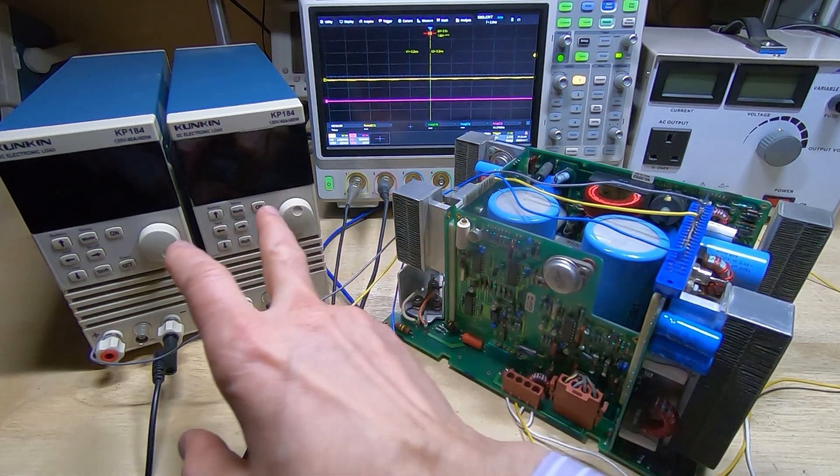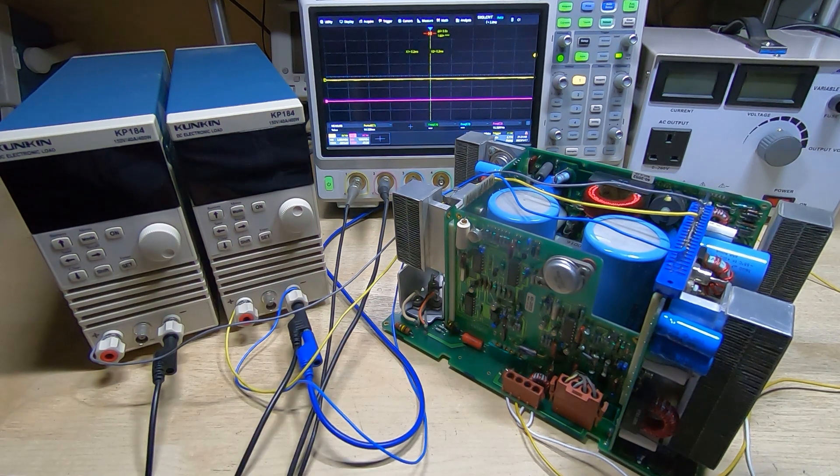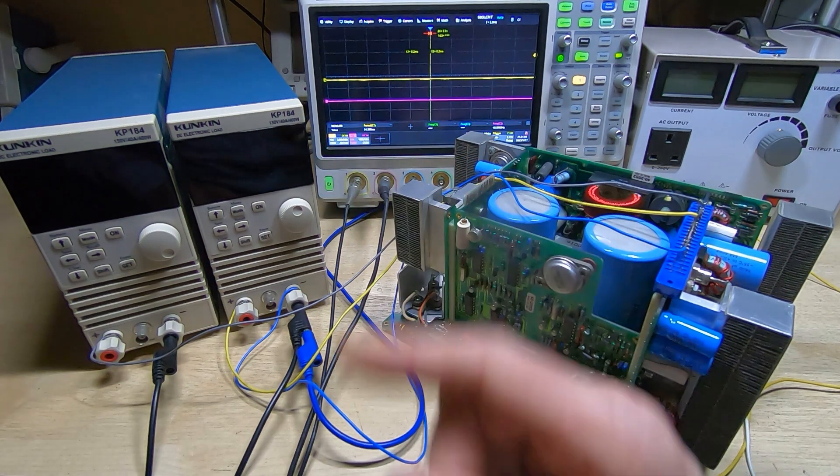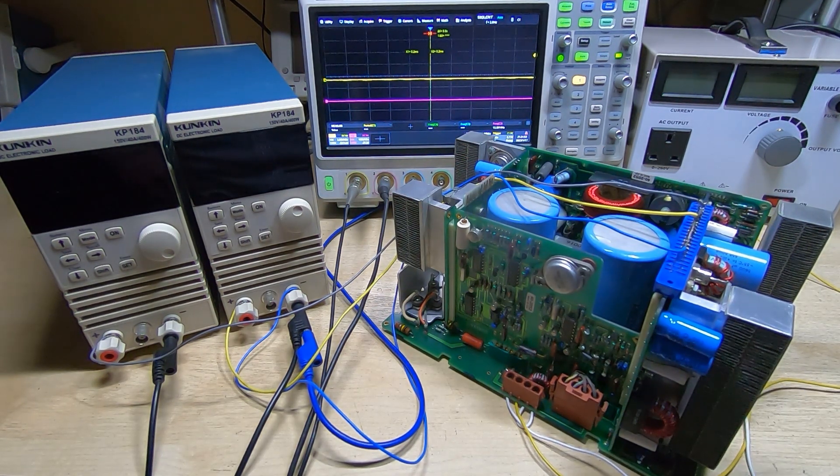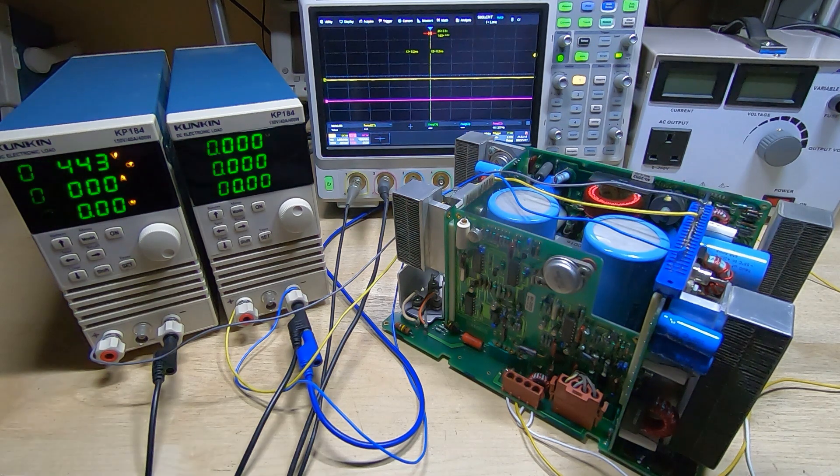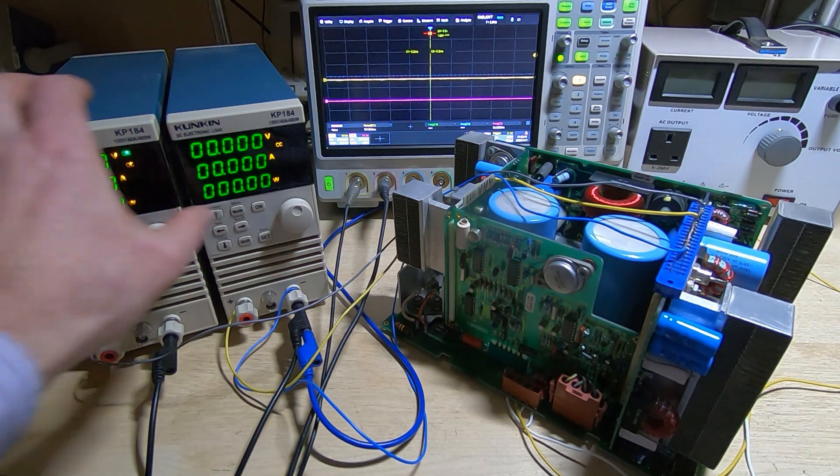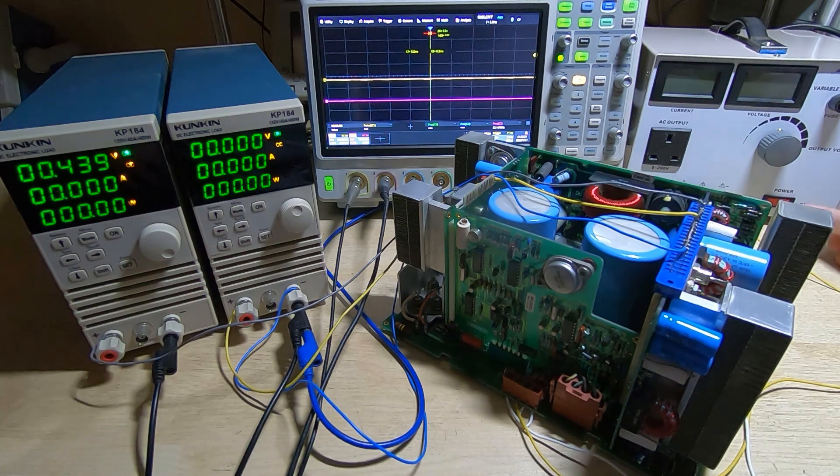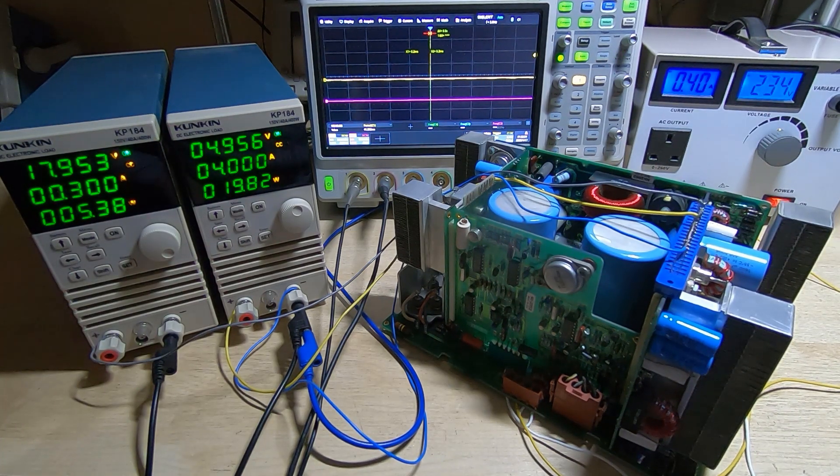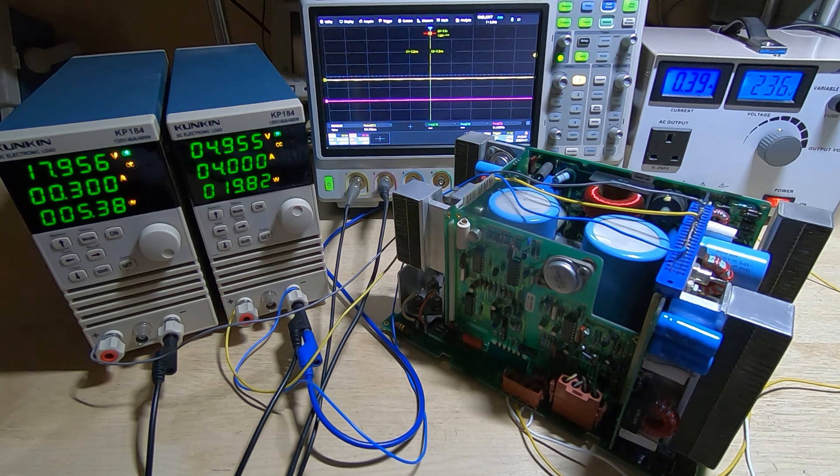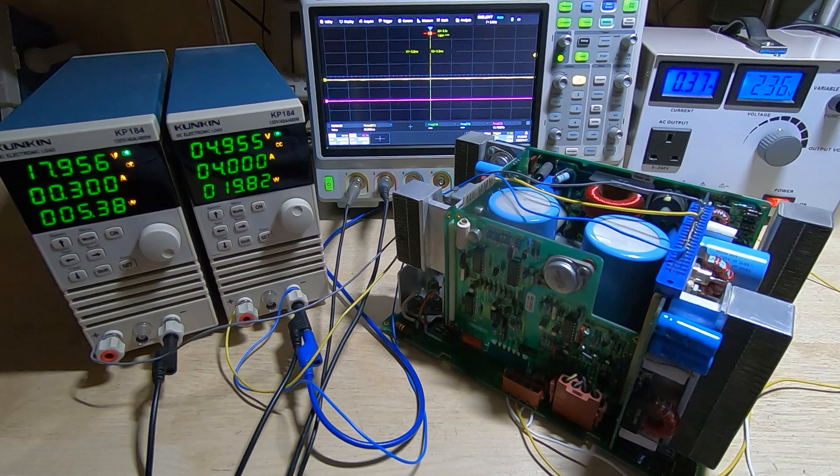I'll turn this on and demonstrate what I've been doing. Unfortunately these Kikusui supplies do cause a lot of flicker on the camera so I'll turn off one of the lights and that will reduce the flicker. We'll enable these and then turn on the supply. The load on the left is monitoring the plus 18 volt rail and the one on the right is monitoring the 5 volt rail. I've got the 5 volt rail currently set to 4 amps.